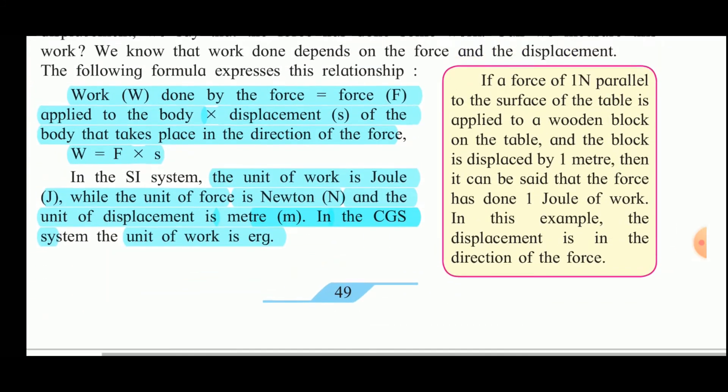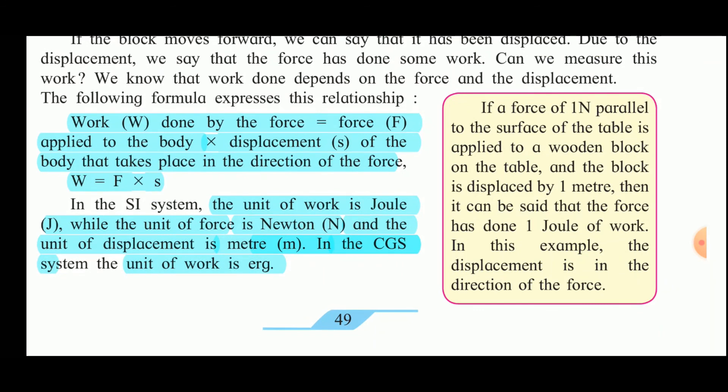If a force of one Newton parallel to the surface of the table is applied to a wooden block on the table, and the block is displaced by one meter, then it can be said that the force has done one Joule of work. In this example, the displacement is in the direction of the force.